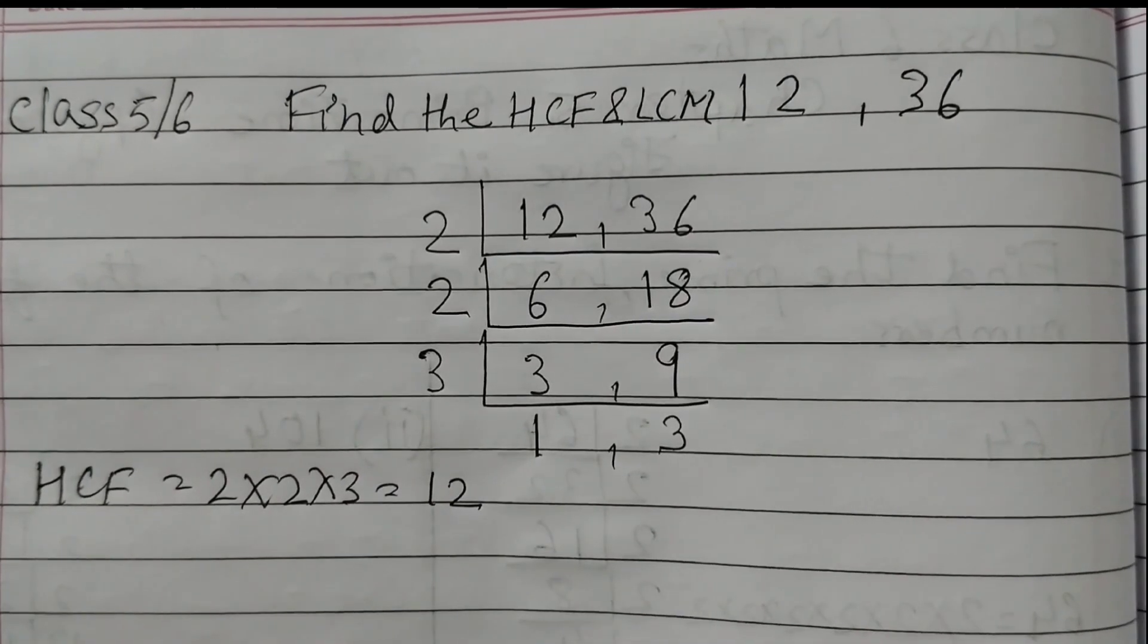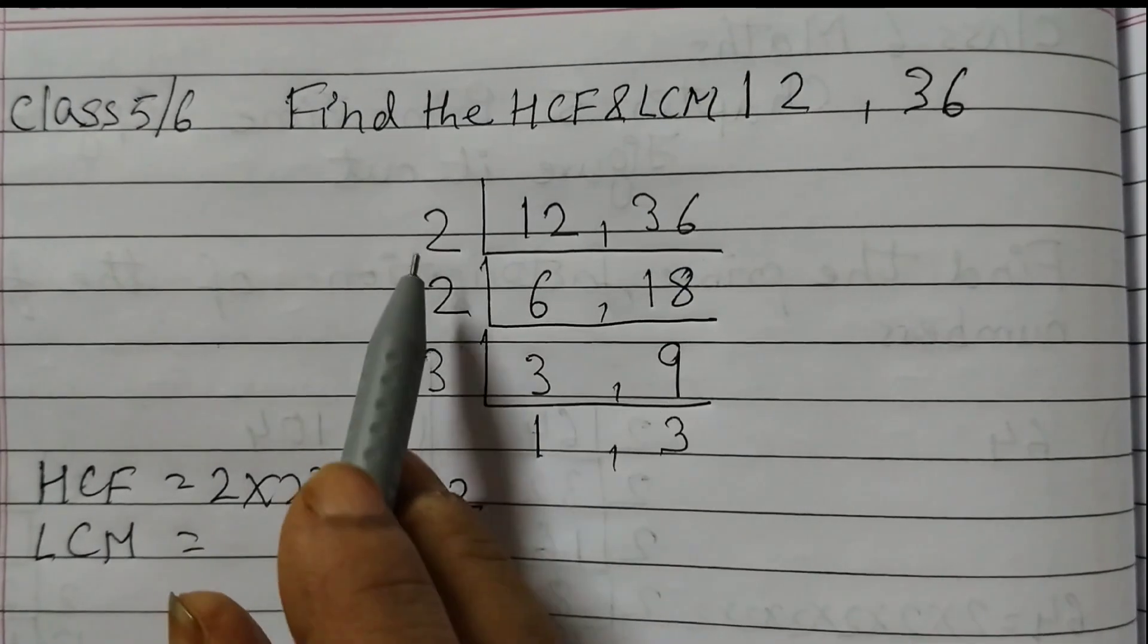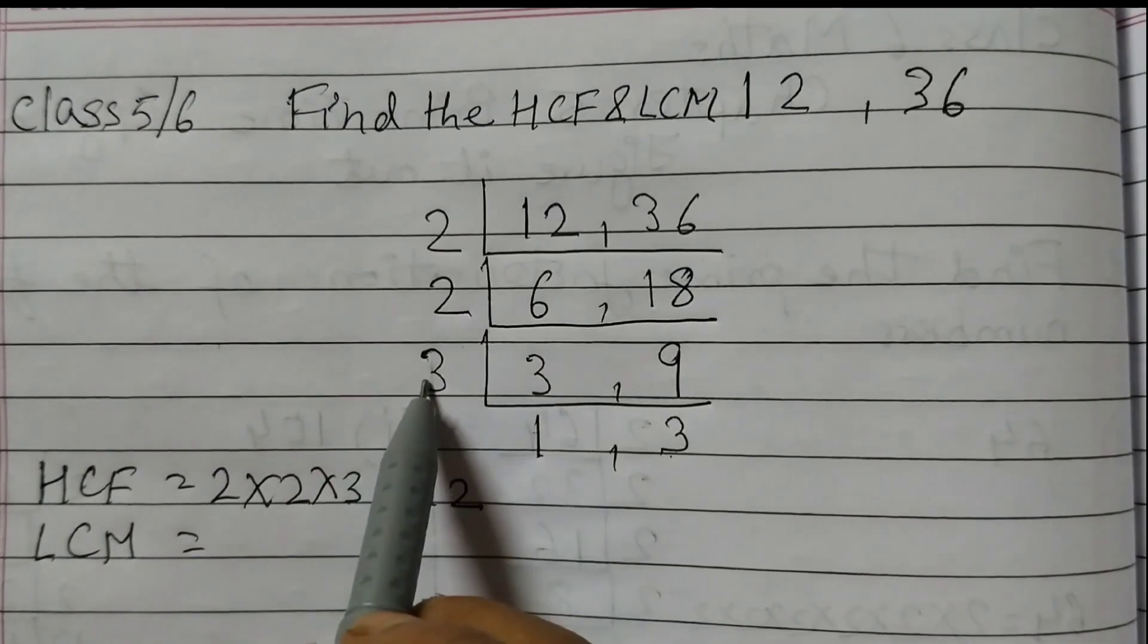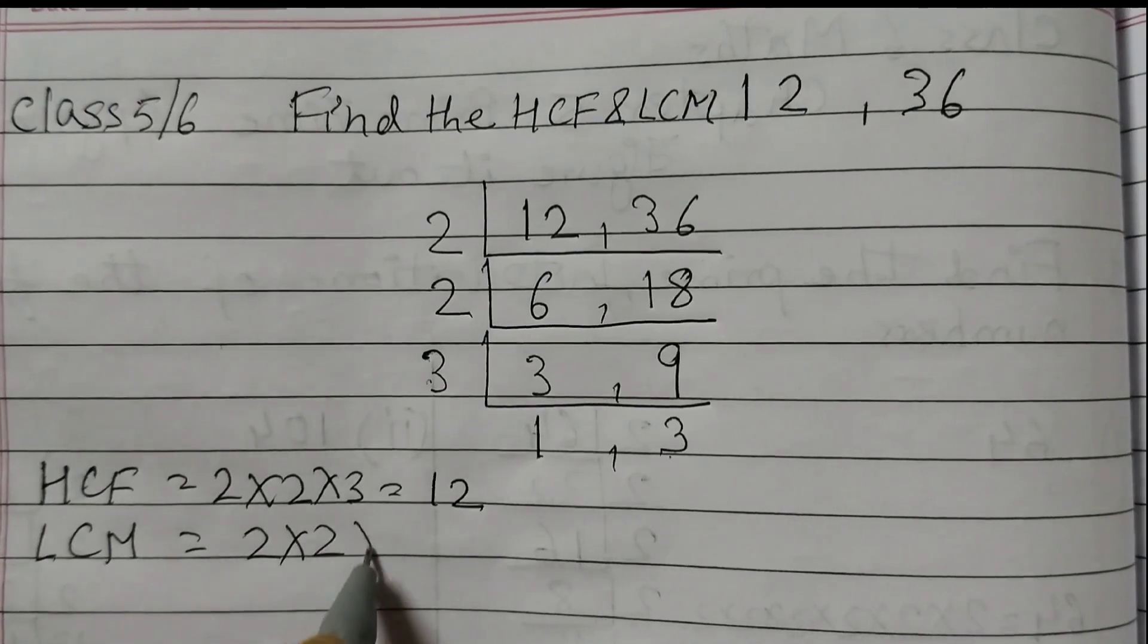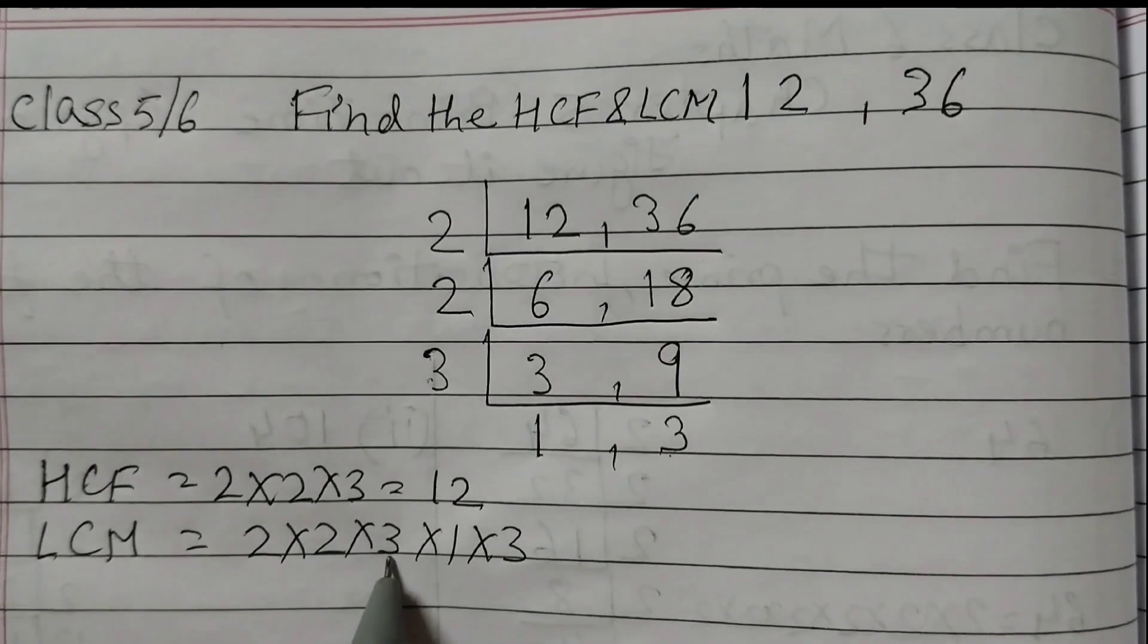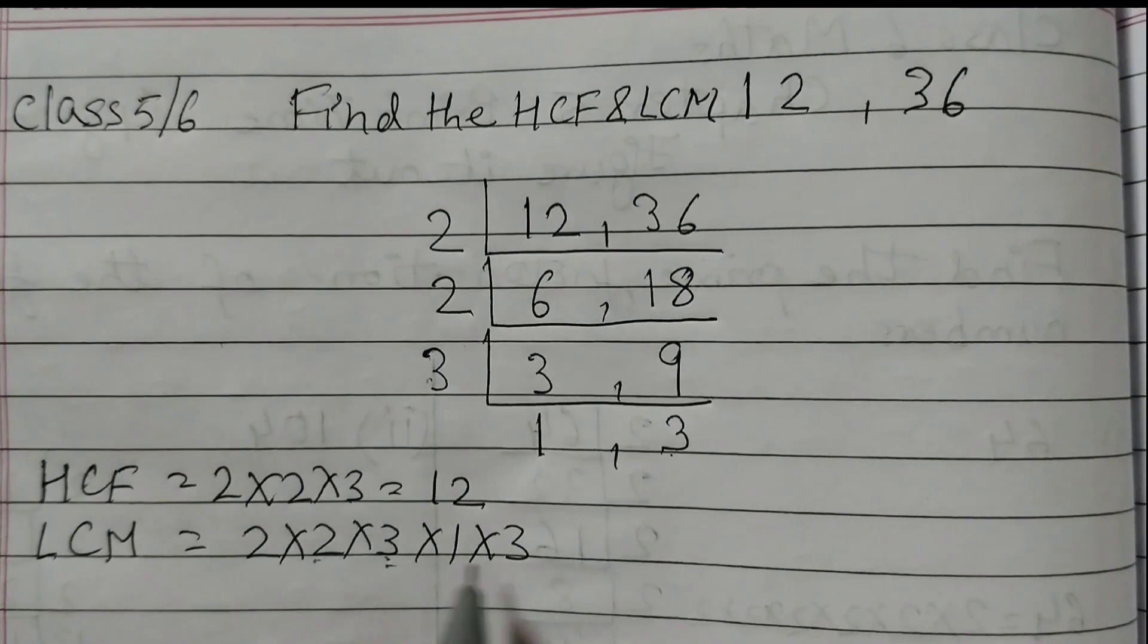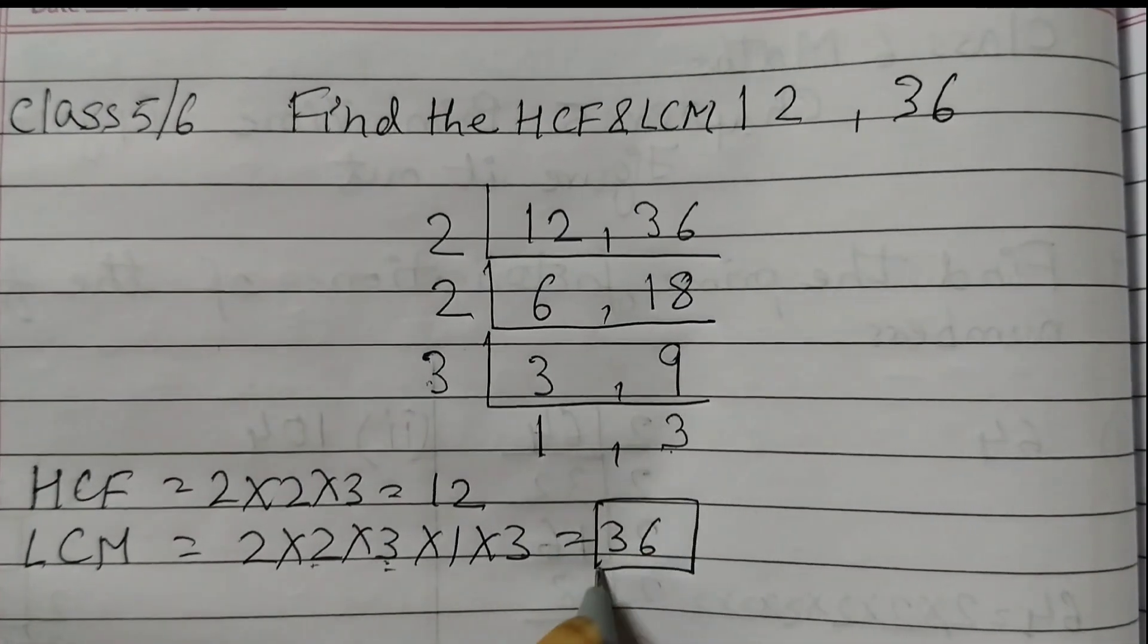So 12 is the highest common factor. And to find the LCM we need to multiply all the numbers on the sides here and down here. So it is 2 into 2 into 3 into 1 into 3. So 2 times 2 is 4, 4 times 3 is 12, 12 times 3 is 36. So 36 is the LCM.